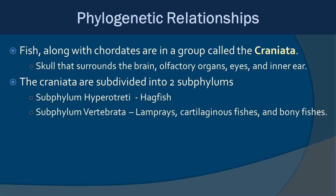Fish, along with chordates, are in a group called the Craniata, which is characterized by having a skull that surrounds the brain, olfactory organs, eyes, and inner ears — basically all those sensory organs we associate with that.